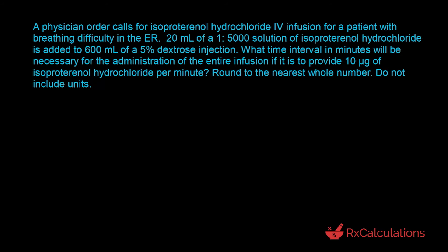In this question, the goal is to determine the duration of infusion in minutes. We've been given the concentration of 1-in-5,000, the volume of drug being added (20 milliliters), the volume of 5% dextrose (600 milliliters), and the mass rate of 10 micrograms per minute. We first need to determine the amount of isoproterenol being infused using the concentration and volume. That gives us: 1 gram in 5,000 milliliters, and we're using 20 milliliters of the solution.